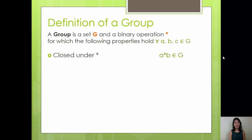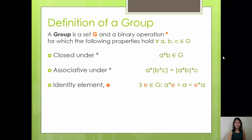The first is that the group is closed under the operation star, meaning that for any two elements in G, when we operate those together, we get an element that's also in G. The second is that the associativity property holds under the operation star. The third property is that there exists an identity element, such that whenever you operate any element in the set G with this identity element, we get the same element back out.